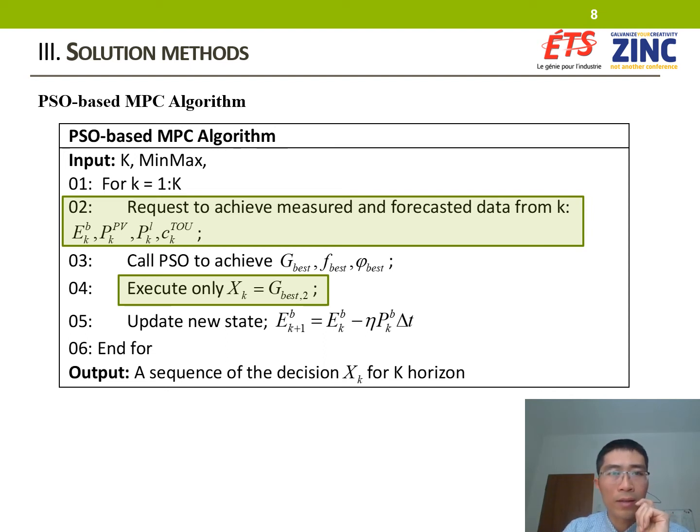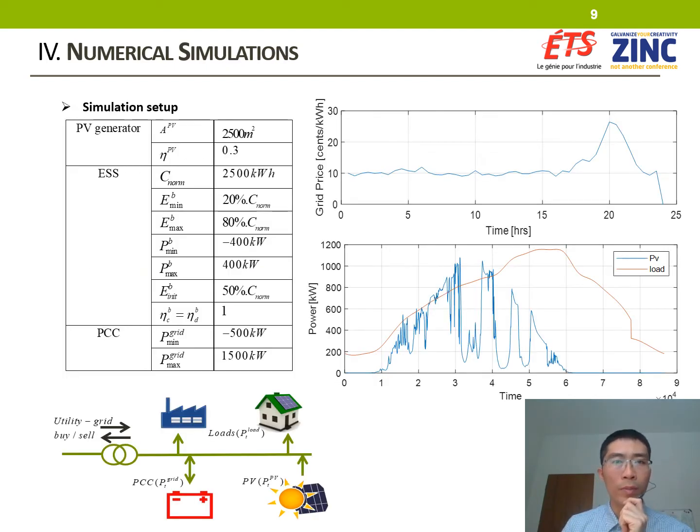To set up the numerical simulation, a PV-based microgrid consisting of 2,500 square meter PV panel and 2,500 kWh battery-based energy storage system with fluctuating load that's connected to the main grid is considered. This simple configuration allows to form a linear optimization problem in order to compare with the PSO algorithm. The parameters and coefficient setup for numerical simulation is illustrated in the table, and on the right, the sample of the forecasted price, PV output, and load is illustrated.